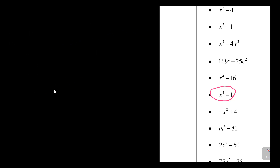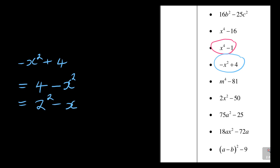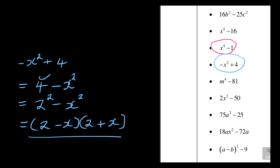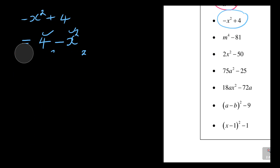Here's an interesting one: 4 minus x squared. This is a hidden difference of two squares. Always start with the positive term first — so it's 2 squared minus x squared. Remove the squares: you see 2 minus x and 2 plus x. Don't write x minus 2; write what you see: 2 minus x in the first bracket and 2 plus x in the second. The rules are the same — the only difference is starting with a number instead of x.